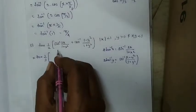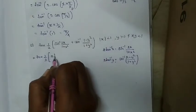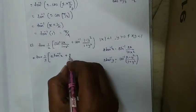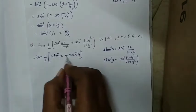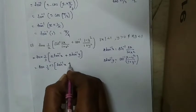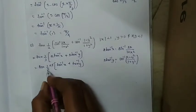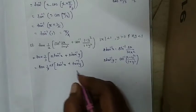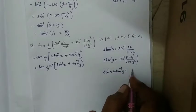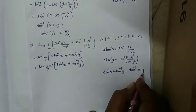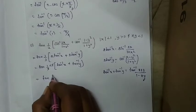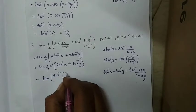So this becomes tan of (1/2)[2 tan inverse x + 2 tan inverse y]. Taking 2 common from both terms inside gives tan of (1/2) × 2 × [tan inverse x + tan inverse y]. The 2 and 1/2 cancel. Now tan inverse x + tan inverse y equals tan inverse((x+y)/(1−xy)). We apply this formula.